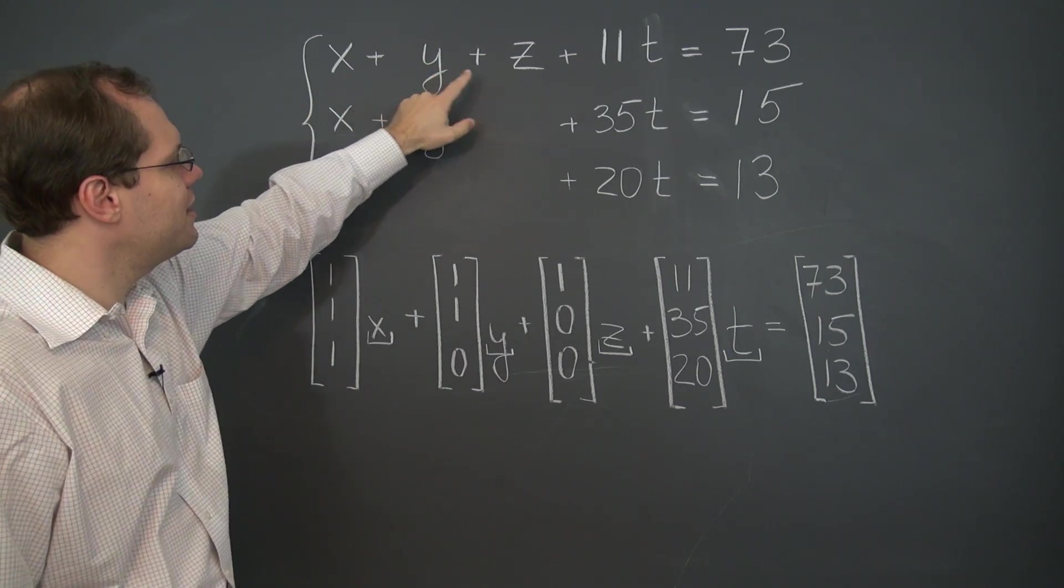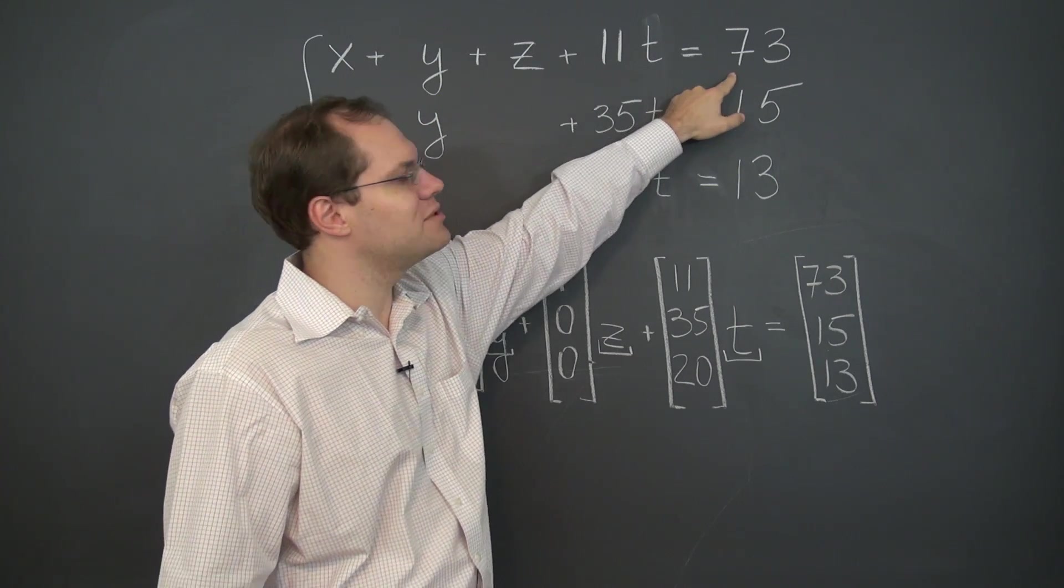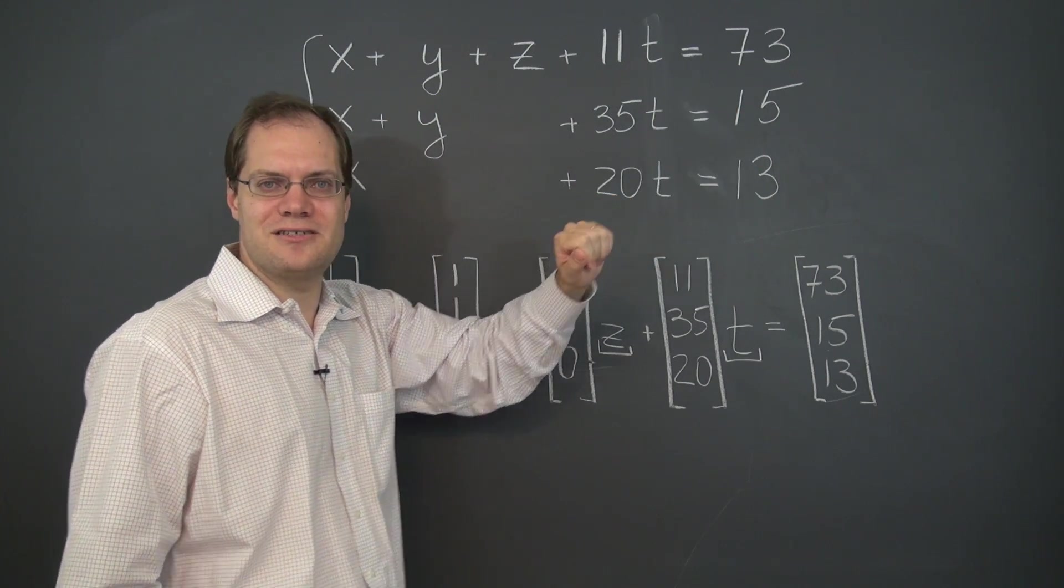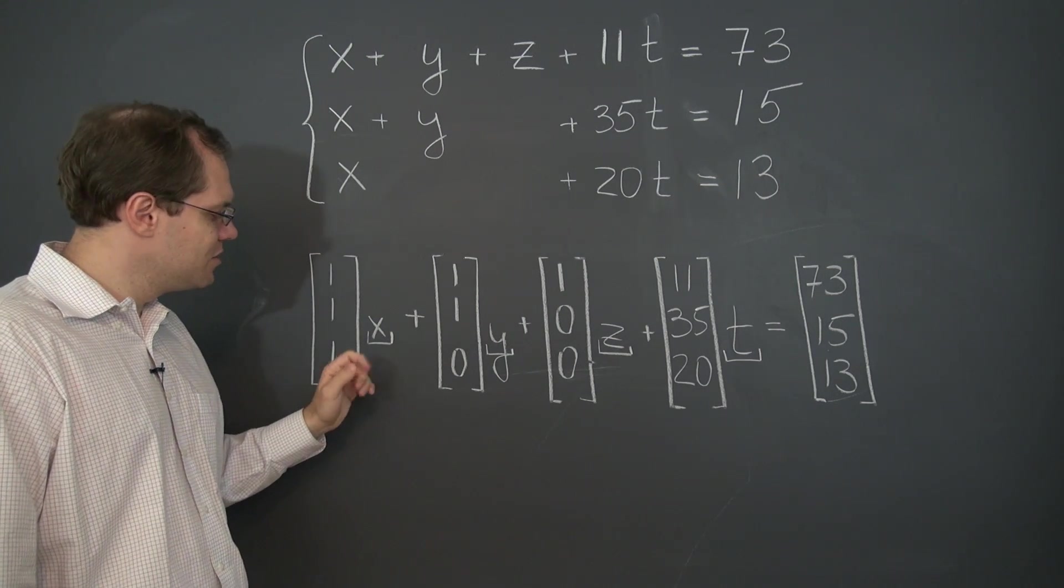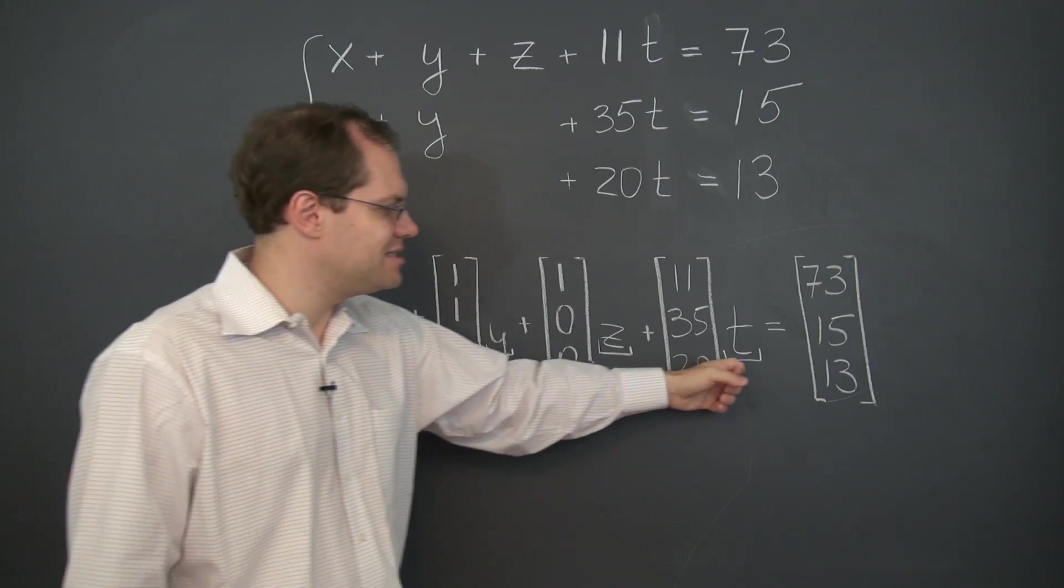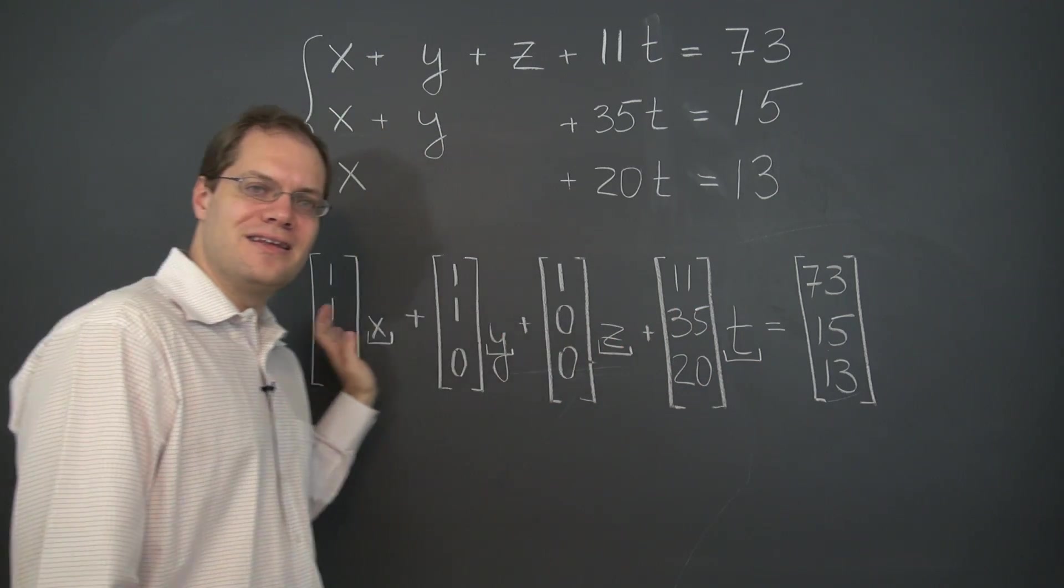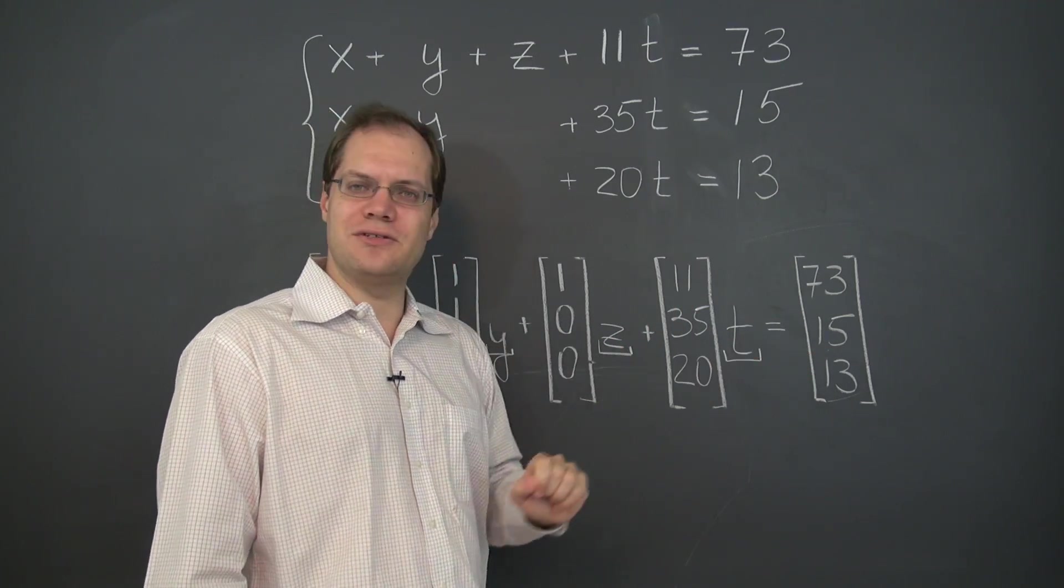x plus y plus z plus 11t equals 73, and two more similar conditions. And to solve this decomposition problem, it means to find four numbers x, y, z, and t such that this linear combination evaluates to this vector, and in particular,